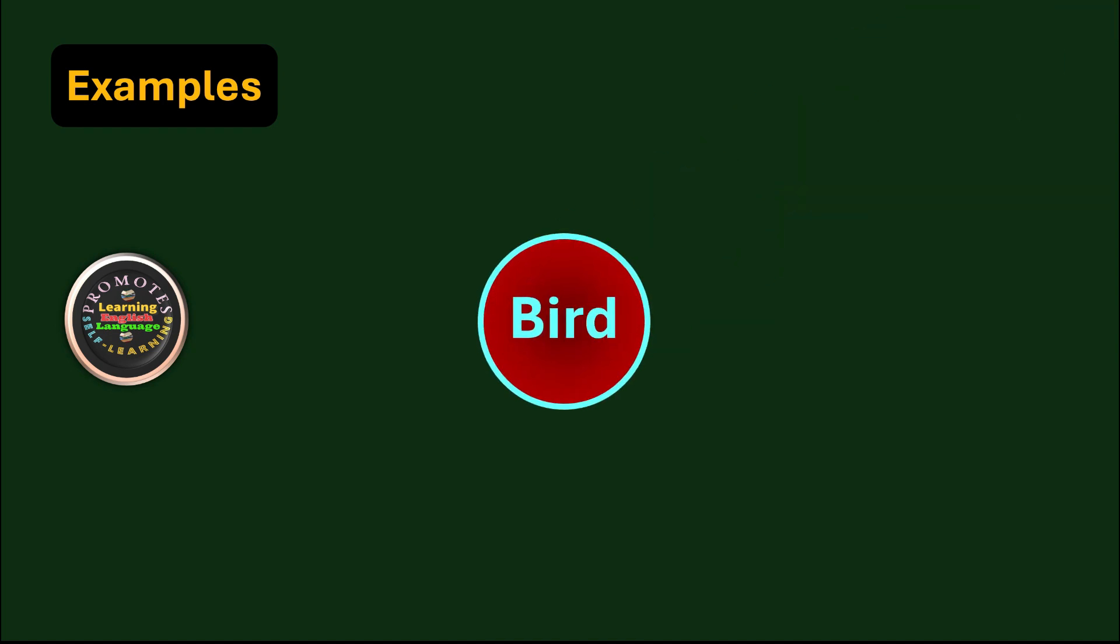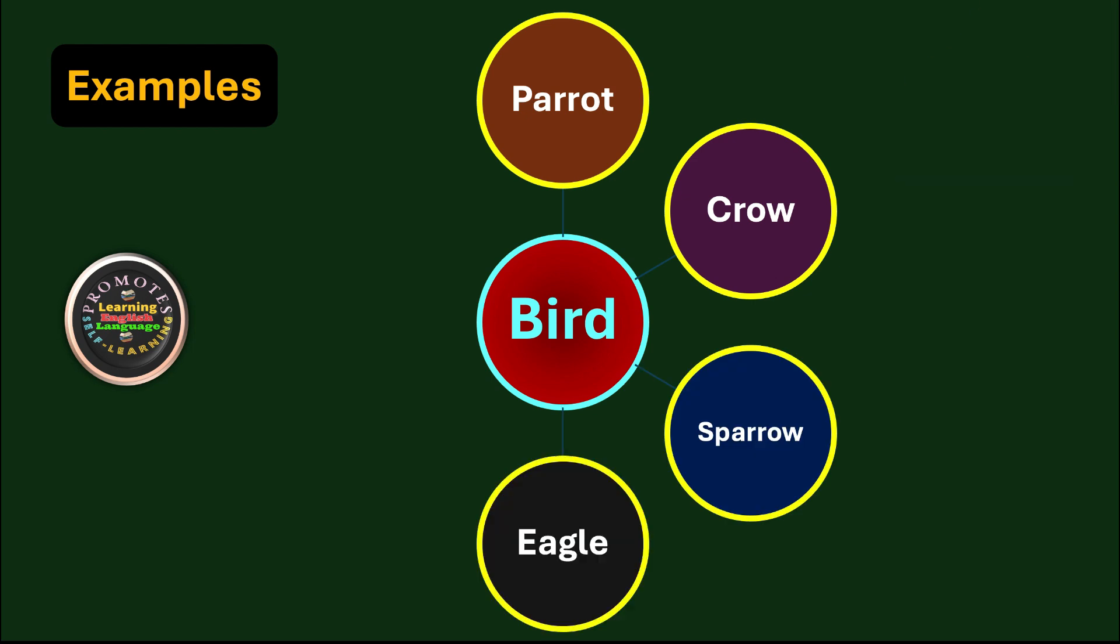We have some more examples about noun. Take example bird, like the names of parrot, crow, sparrow, eagle, robin, and hen. They are all names of birds and therefore they are nouns.